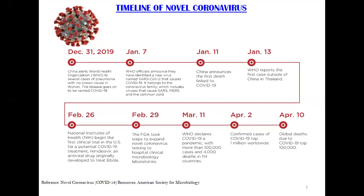My first slide is about the timeline of the novel coronavirus. COVID-19 is a pneumonia-like disease that was first identified in Wuhan, China on December 31st, 2019. The disease is caused by a new coronavirus, SARS-CoV-2, that is similar to the SARS virus. There are several updates over time — for instance, on March 11th, WHO declared COVID-19 a pandemic with more than 1,000,000 cases and 4,000 deaths in 114 countries.